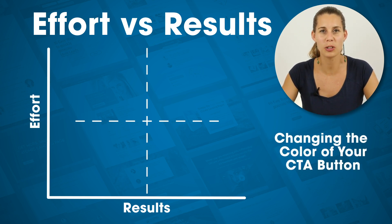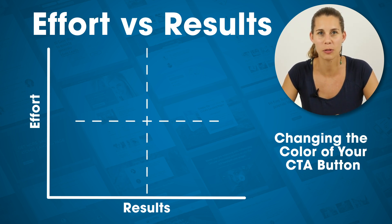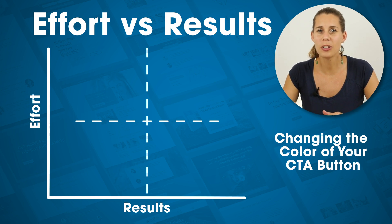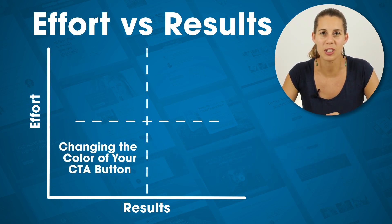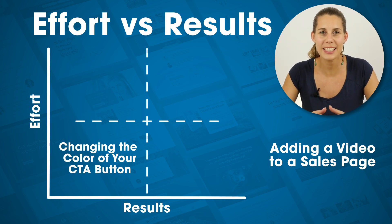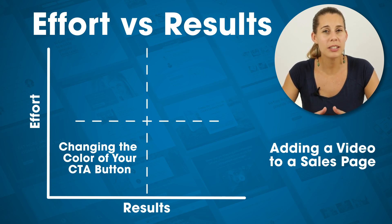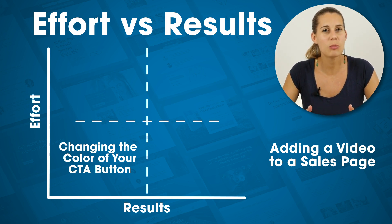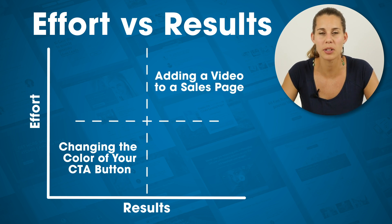Let me give you a few examples. The first one: changing the color of your call-to-action button. This is really, really low effort — it's like one click to change the color of a button. But the chances that this actually results in a significant difference in your conversions is also fairly low. So I'd rate this on the low effort and low possible results scale. Now let's take adding a video to a sales page. Creating a sales video can be fairly intensive, so I would rate this as medium to high effort. But the possible results from going from no video to a video are also fairly high, so this falls in the high effort and high possible results quadrant.